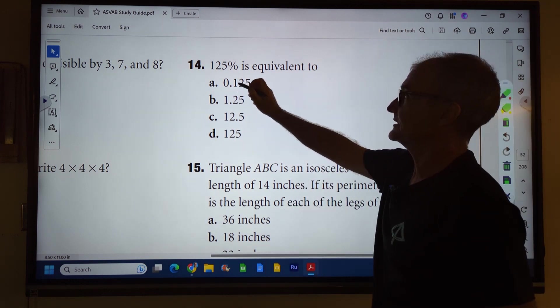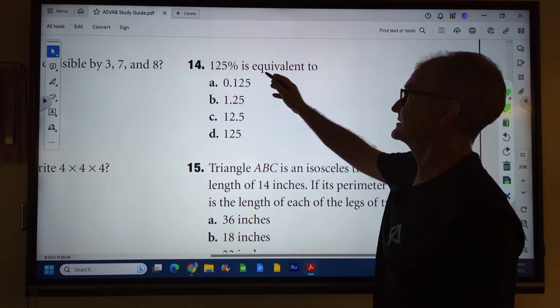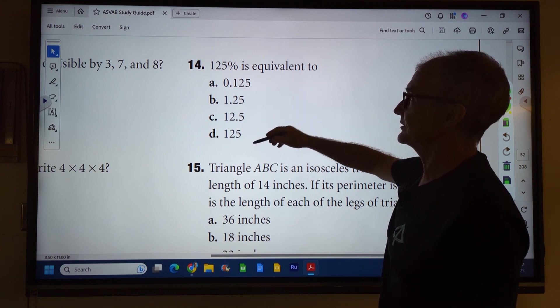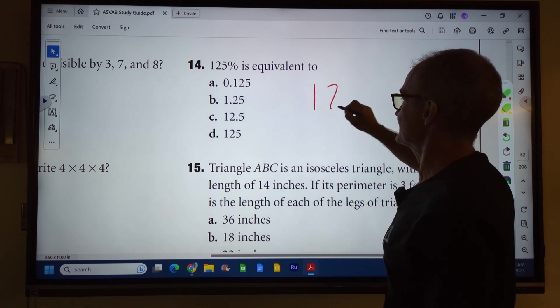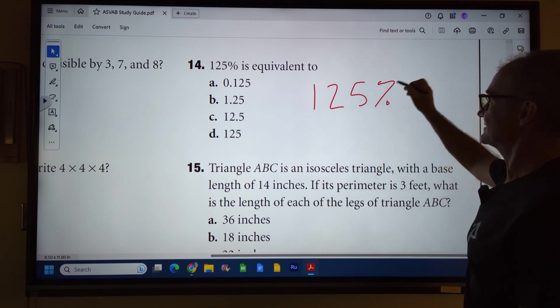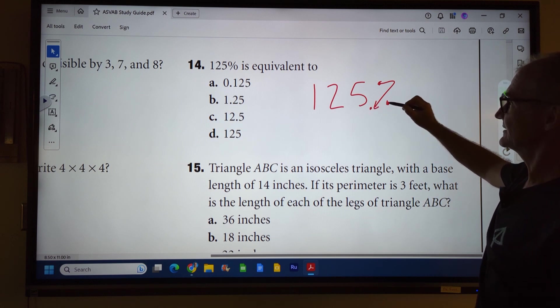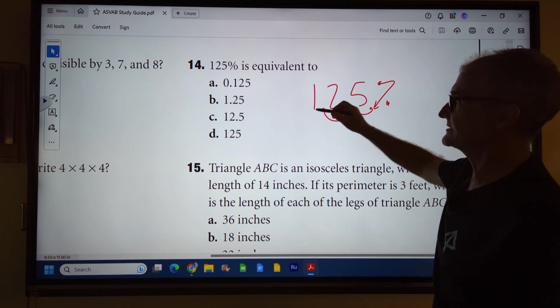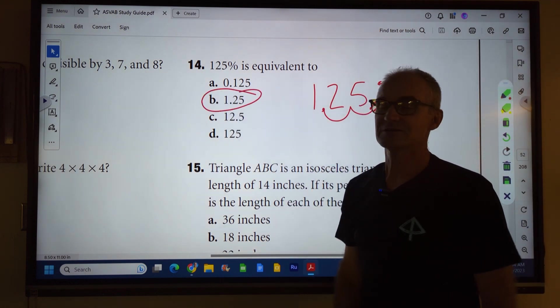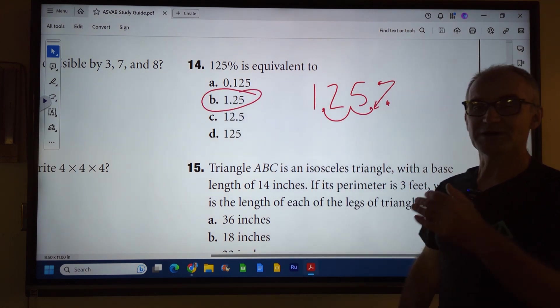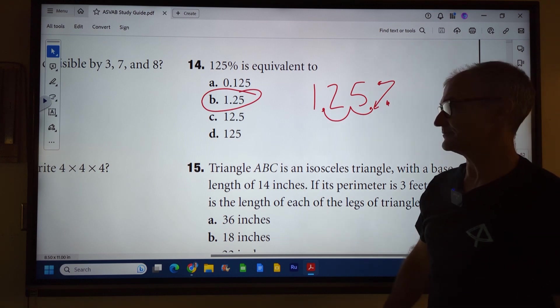Number 14: 125% is equivalent to these four answers. The way I remember this is I have 125%. This thing's like an arrow saying go over one, two places. So I start right here. These two dots remind me to go over one, two places and I get 1.25. Correct answer B. Pause the video and then let's do the next problem.